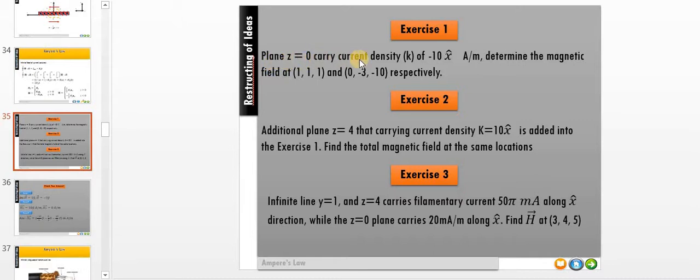You carry current density K of negative 10 in the x-direction and determine the magnetic field at (1,1,1) and also (0, negative 3, negative 10) respectively.